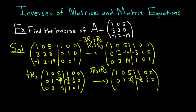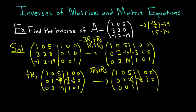Now we change the third row with negative 2 times row 2 plus row 3. So 0 plus 0 is 0. Negative 2 plus 2 is 0 — that was the whole point. For the third entry: negative 2 times negative 15 halves is 15, plus negative 14 gives us 1. Multiplying negative 3 halves by negative 2 gives positive 3, plus 1 is 4. Multiplying 1 half by negative 2 gives negative 1, plus 0 is negative 1. And 0 plus 1 is 1.